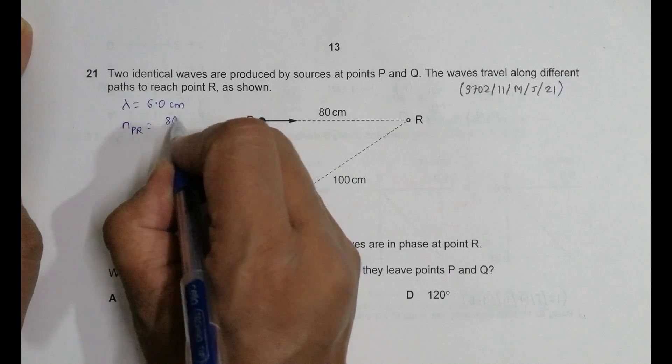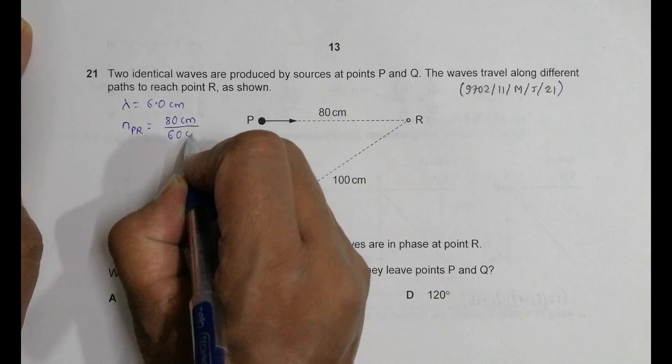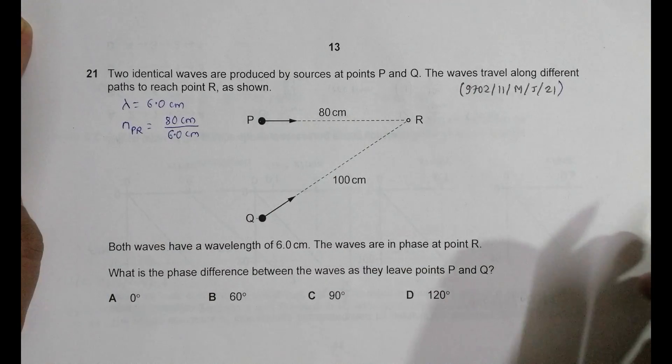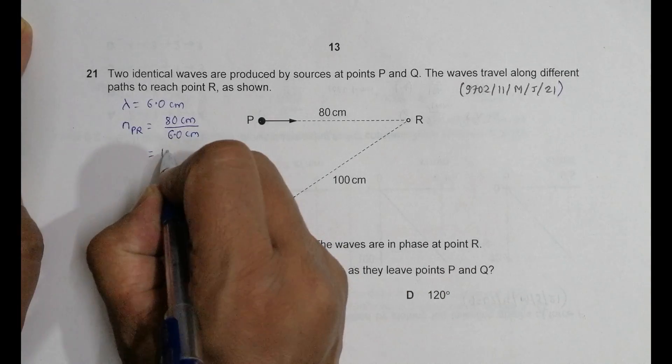Let us say NPR should be equal to the whole distance, the whole distance by the wavelength 6.0 centimeter. So it will be equal to, if I do in the calculator, it will be equal to 13.33, so let me do it as 13 1/3 waves, 13 1/3 wave.